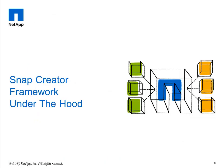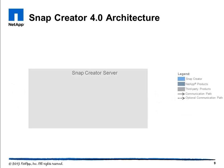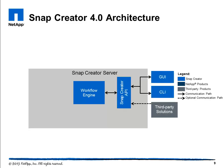Let's take a look under the hood of the Snap Creator framework with an in-depth look at the architecture. The base component is the Snap Creator server, installed on a central backup server — or in smaller environments, on the same host as an application or database you wish to manage. The workflow engine is the central component of Snap Creator. This XML-driven, multi-threaded workflow engine is responsible for running all Snap Creator tasks and commands. Snap Creator APIs are used by the GUI and CLI, and potentially by other products or services. The Snap Creator repository holds information on profiles and configuration files, including global configs. The Snap Creator database stores information on schedules, jobs, RBAC users, and roles.